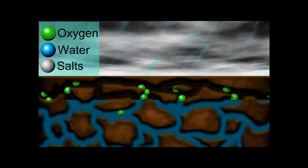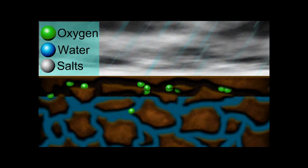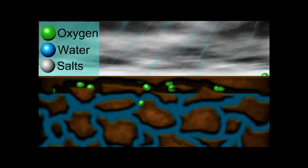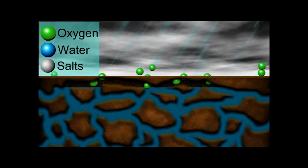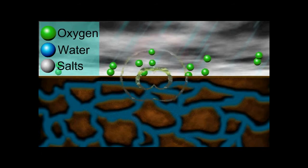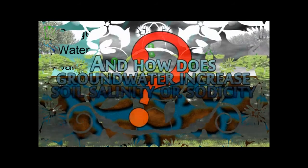Plant roots need oxygen to survive and grow. A lack of oxygen results in shallow root systems and poor plant growth.